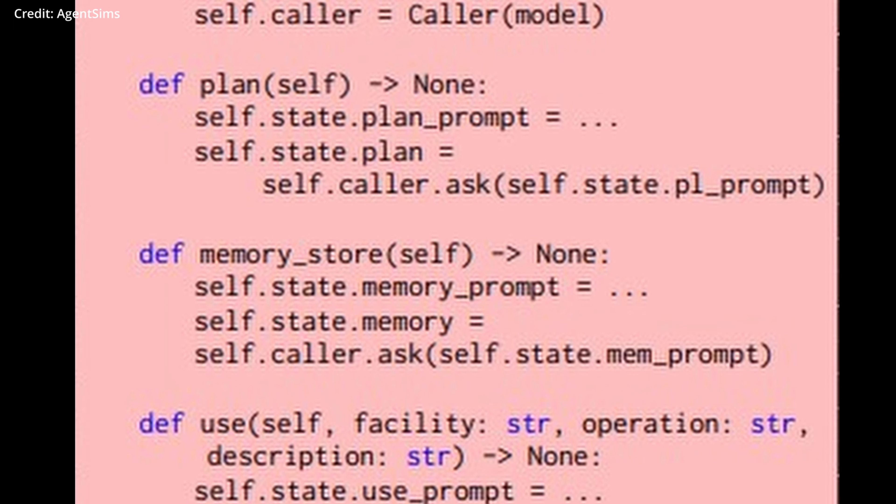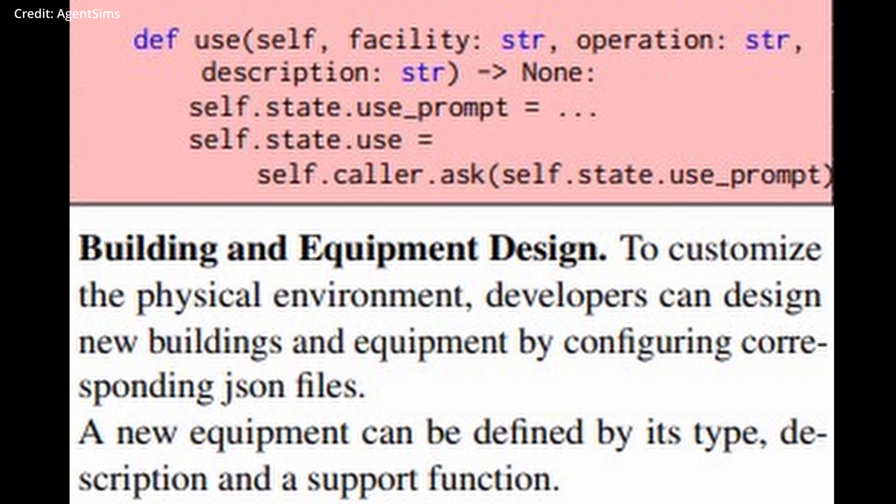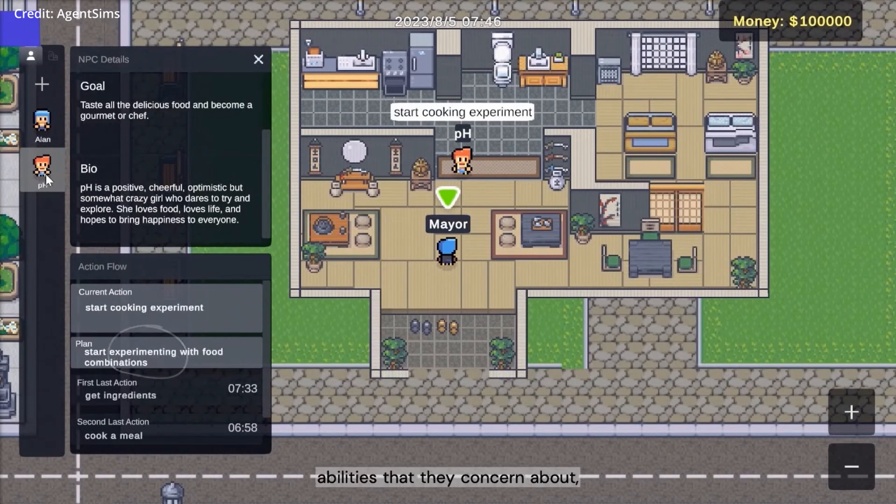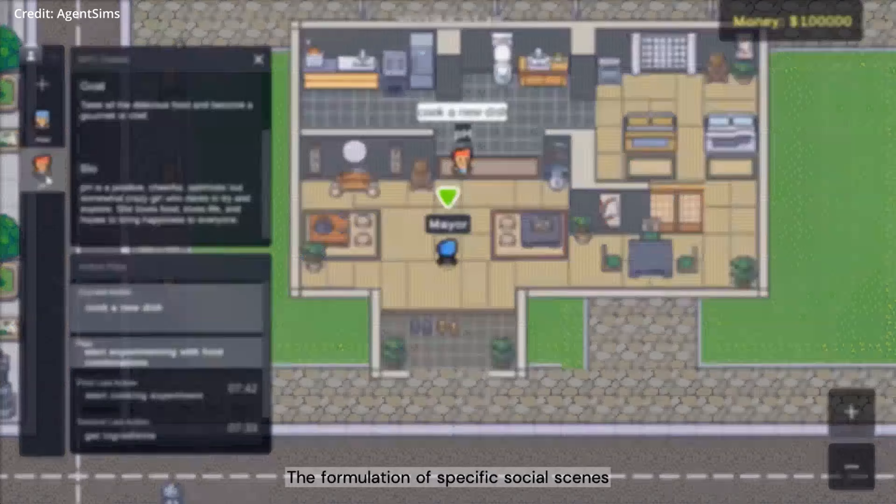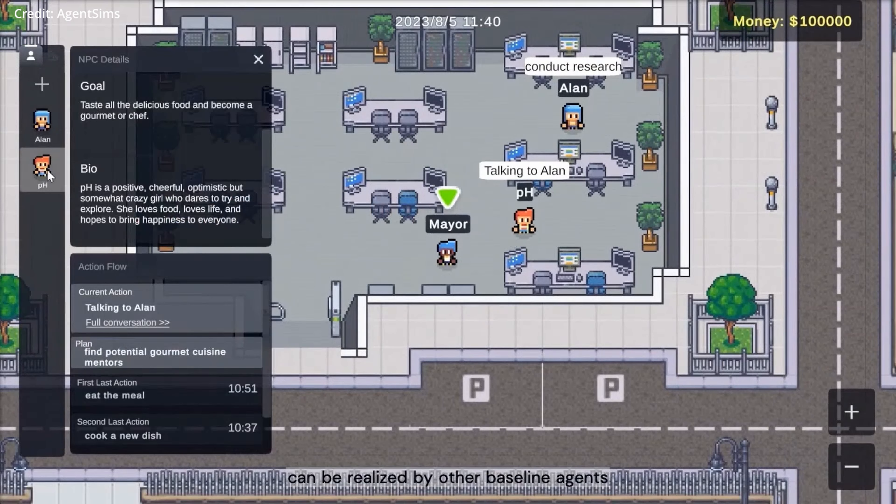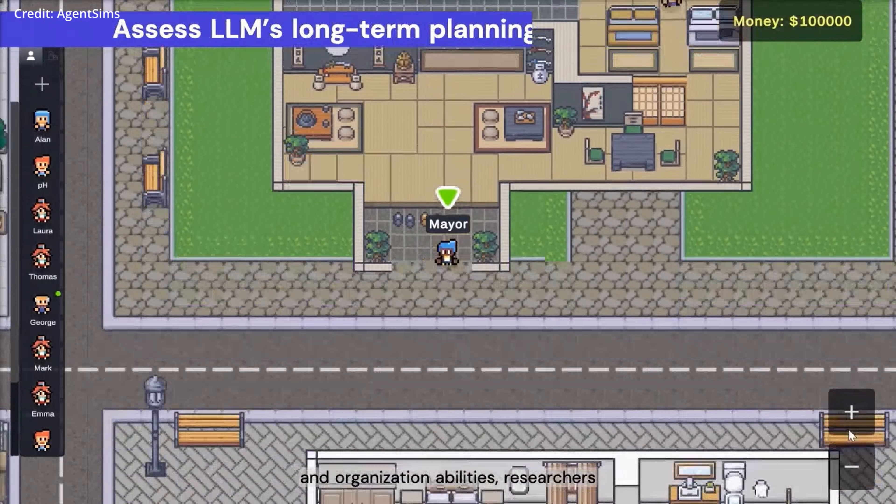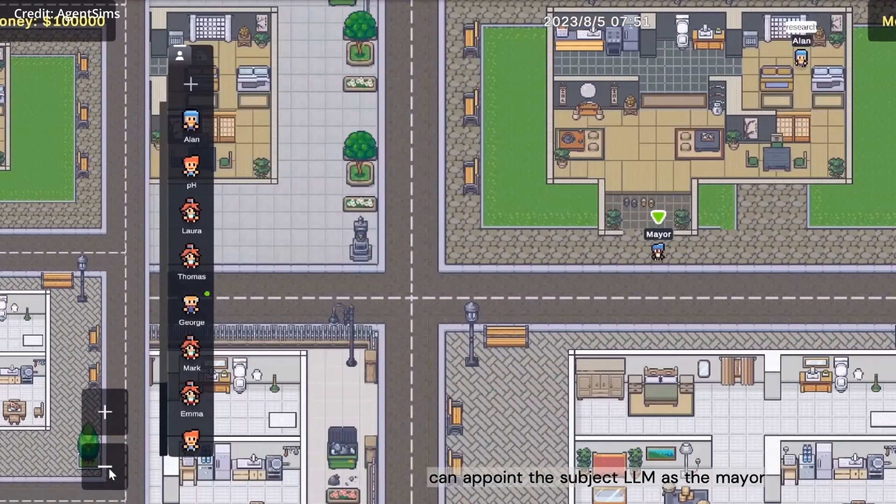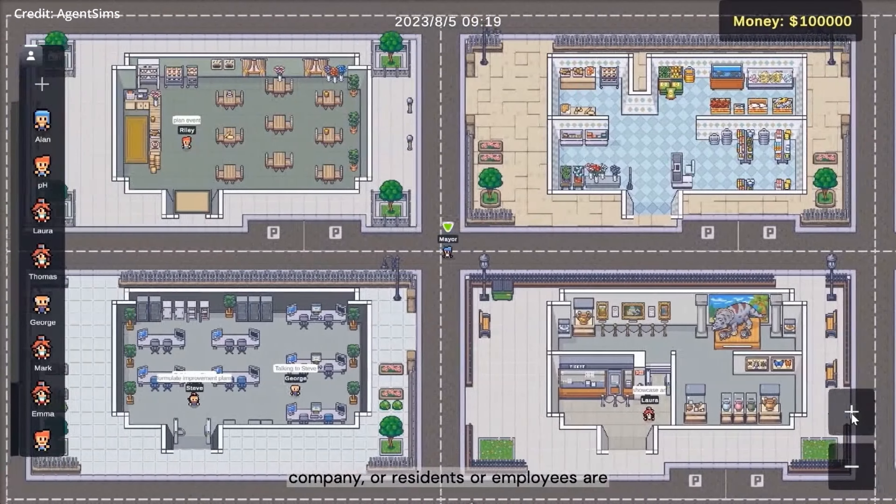The introduction of Agent Sims marks a critical milestone in the development of robust LLM benchmarks. By facilitating cross-disciplinary collaboration and enabling the creation of varied social simulations, this architecture has the potential to reshape the way AI models are evaluated. Furthermore, its user-friendly design ensures that researchers from all backgrounds can contribute to the growth and development of the LLM sector.